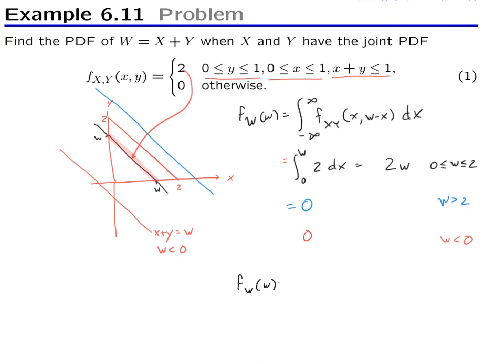So we have a complete expression here. We get f_W of w is equal to 2w, zero less than or equal to w less than or equal to two, and zero otherwise.